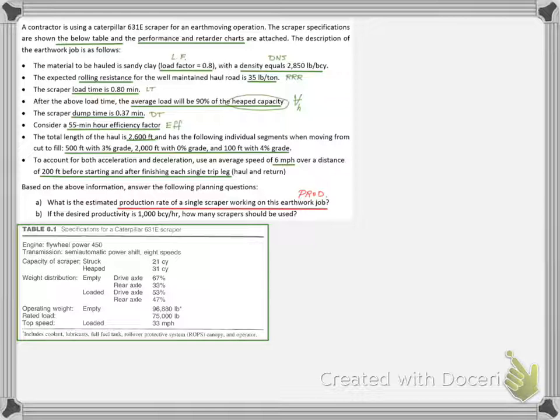In part A, we need to calculate the production rate of a single scraper. In part B, we need to calculate the number of scrapers to achieve a target production rate of 1,000 bank cubic yards per hour.